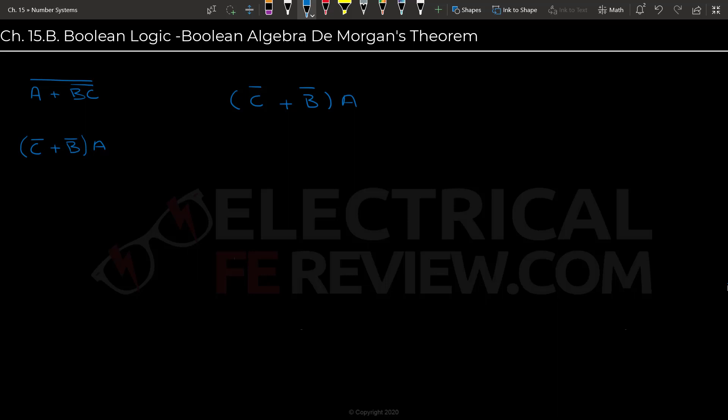So right now we have inverted inputs C or B. And what we're going to do is we know that C and B NOT is going to equal C NOT or B.